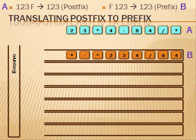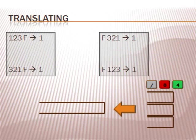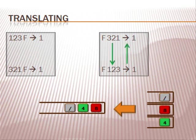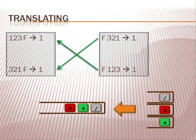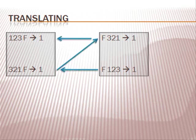This method of translating seemed like solving a prefix problem. The previous method seemed like solving a postfix problem. Using this method, you can translate as shown. You do not ever have to use the second method of translating, because you can flip the equation, use the first method, then flip the equation again.